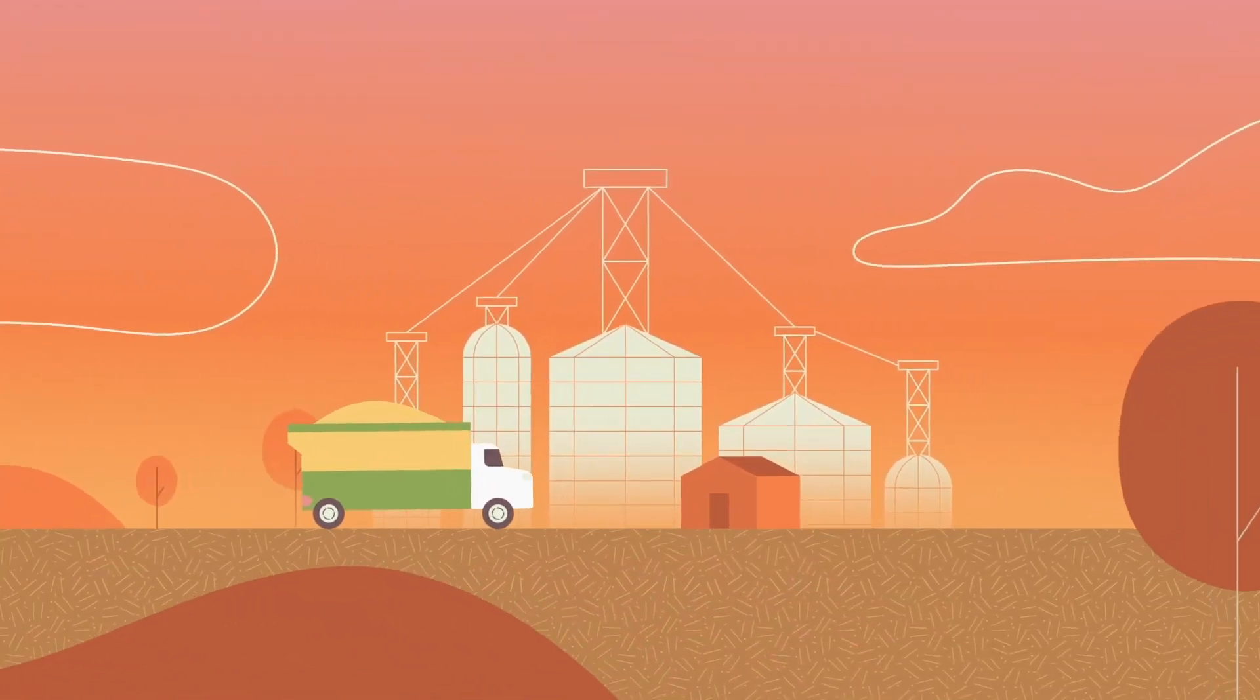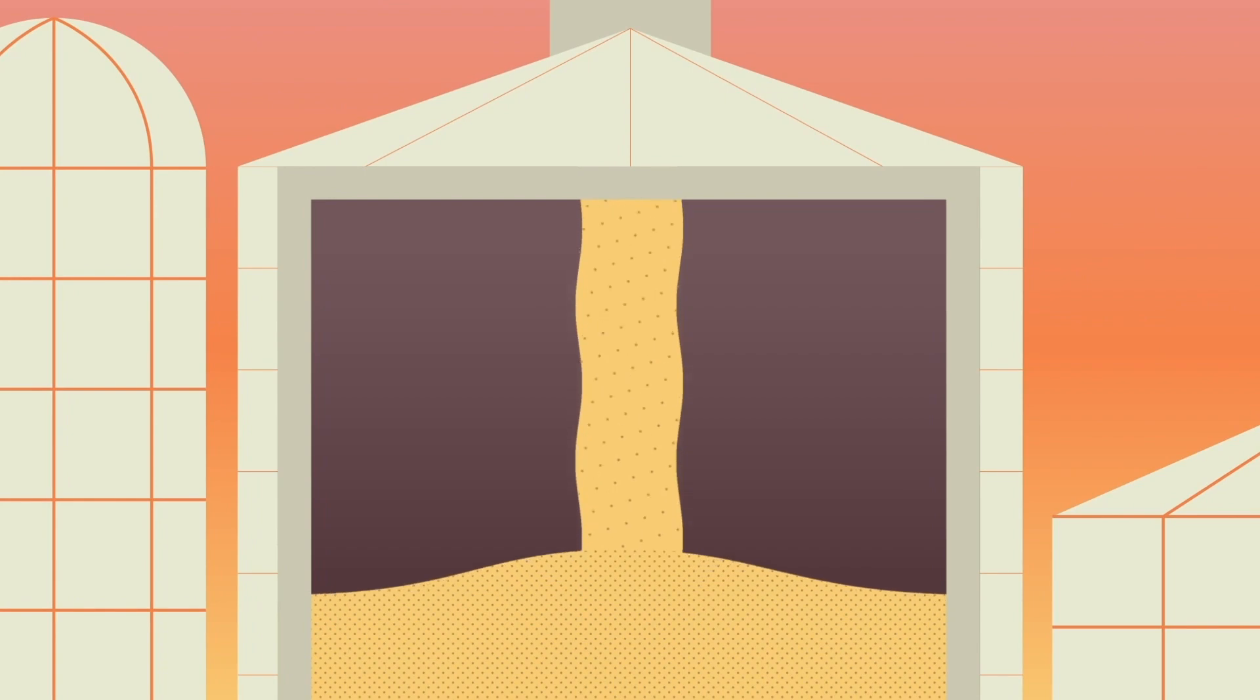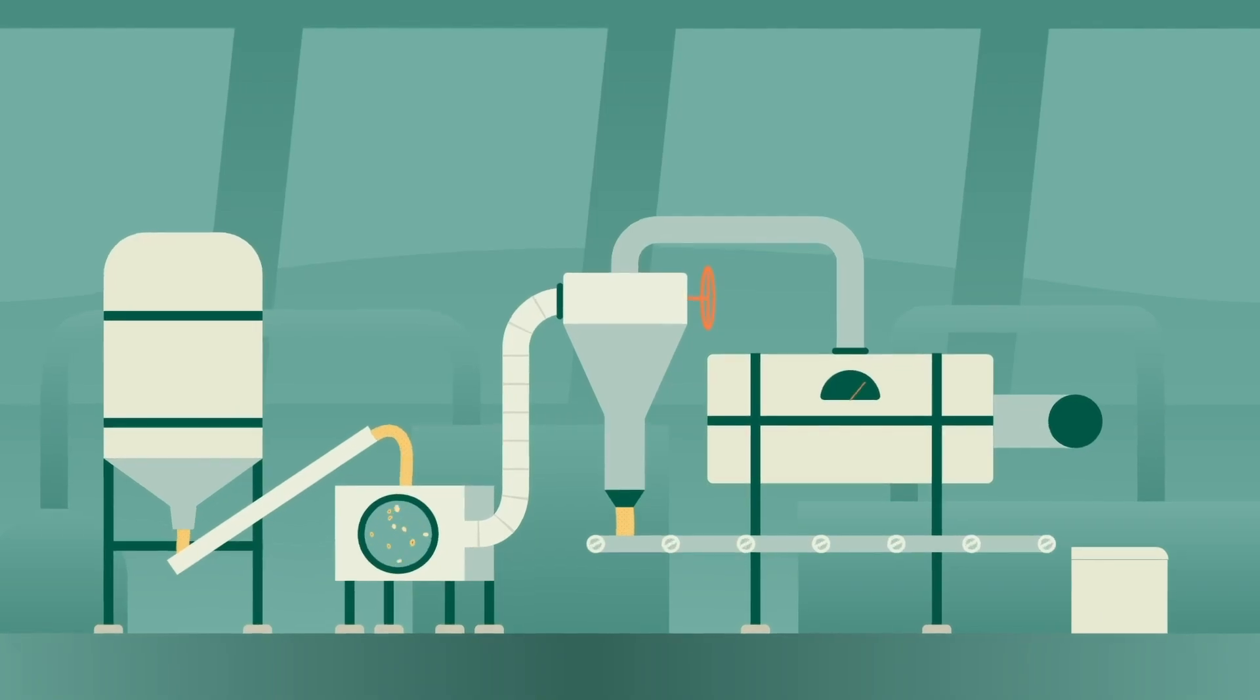The grain elevators store the seeds safely while they search for a processor who will buy them and turn the seeds into oil and meal.